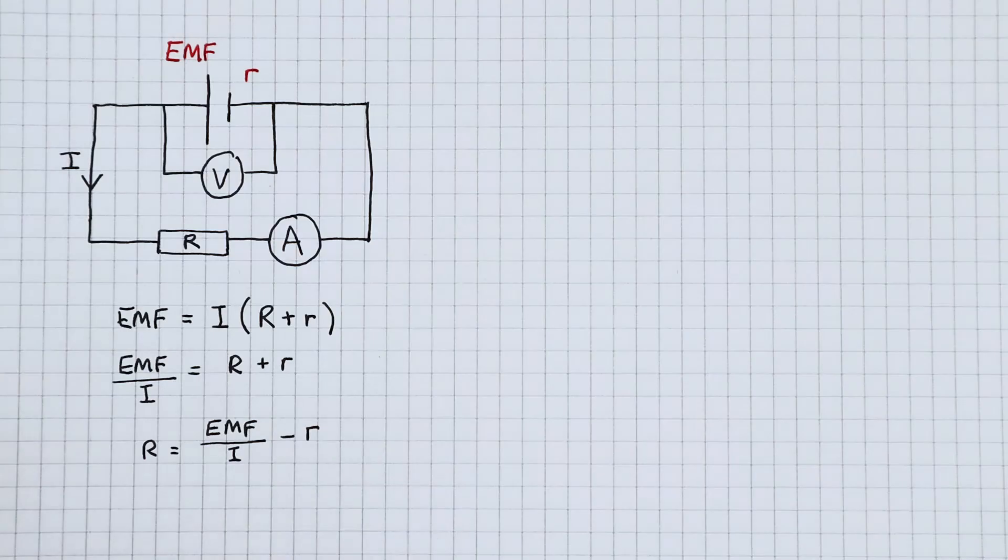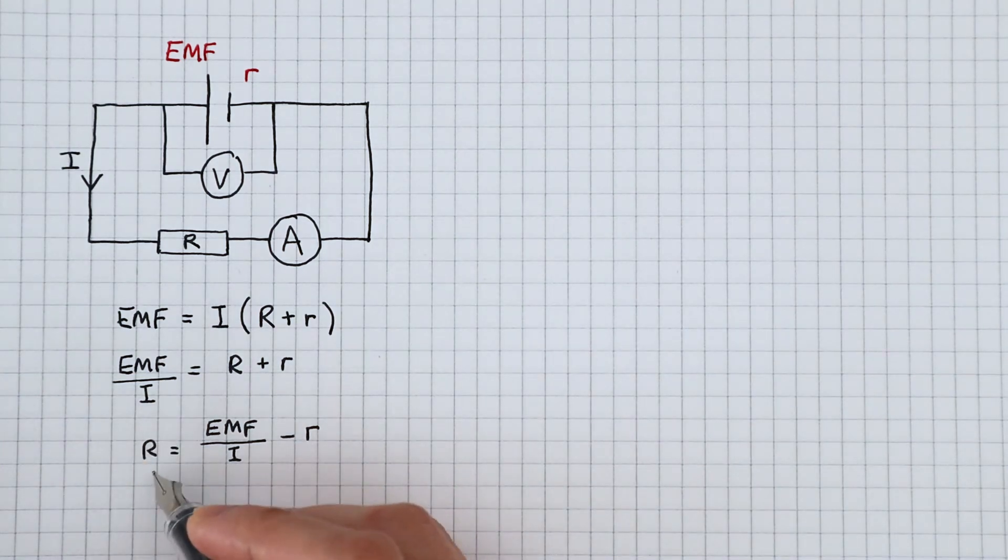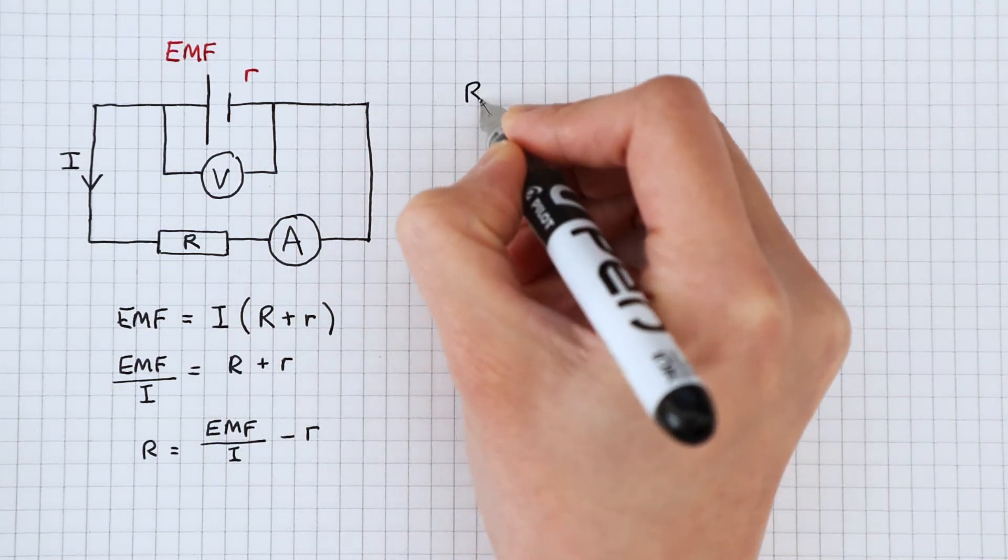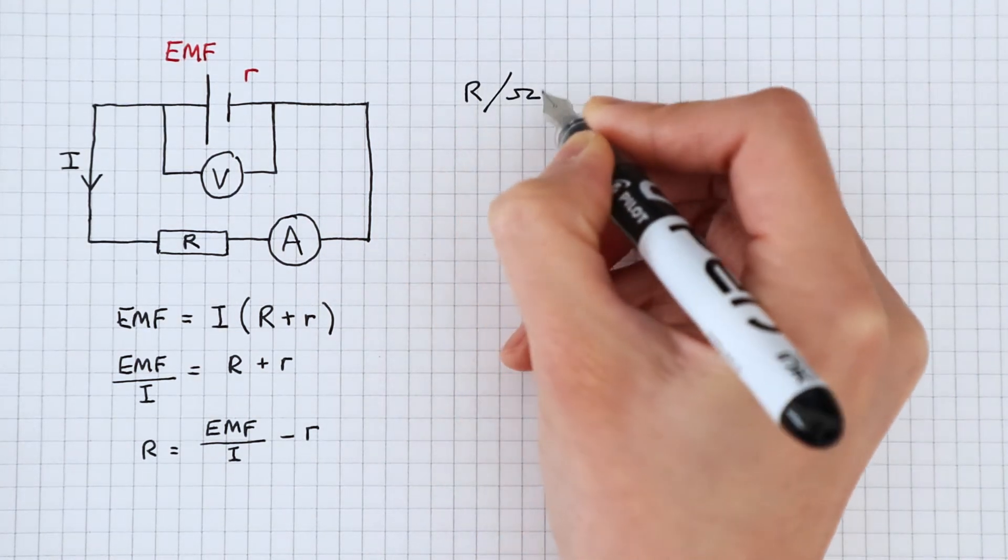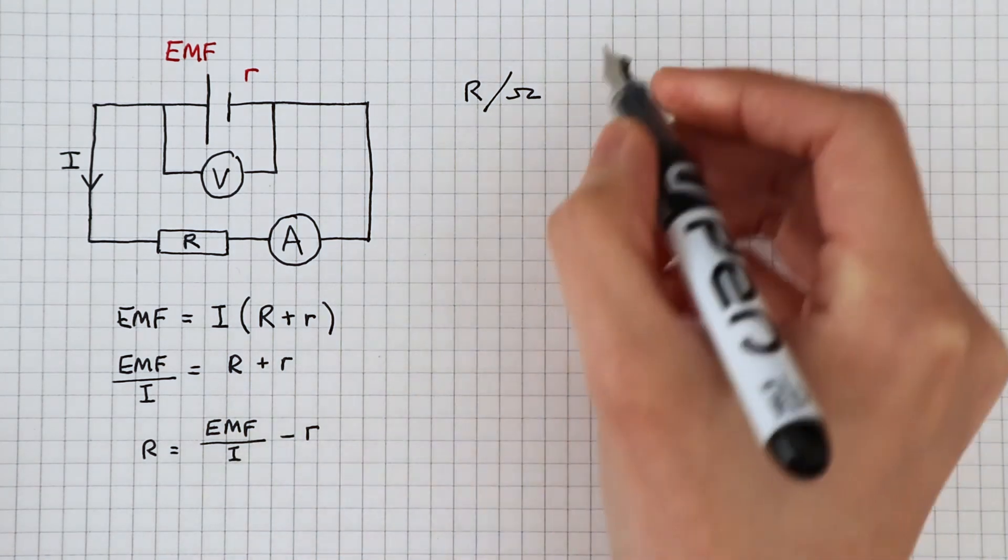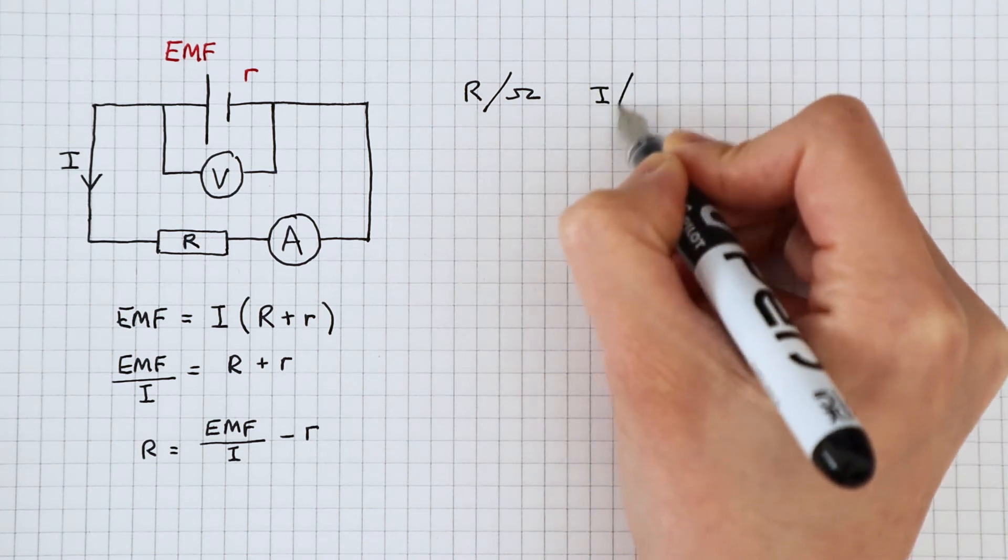In this experiment, we can vary the resistance by swapping the resistor out for different resistors. So the load resistance is the independent variable. We will measure the current. This means the current is our dependent variable.